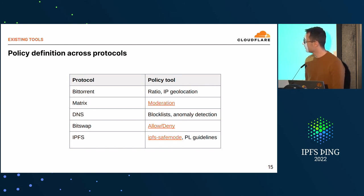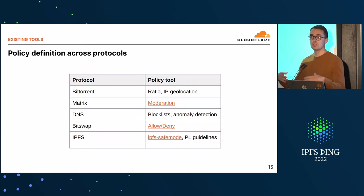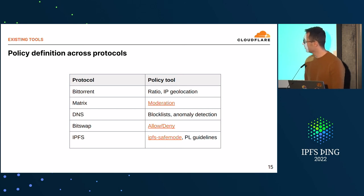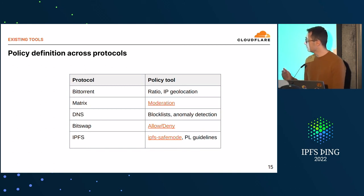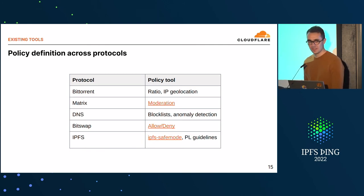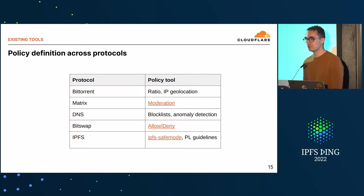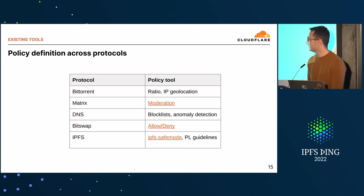Matrix has a very nice approach of room moderation — communities have shepherds who can decide what should be allowed, which is very important for freedom of speech within certain communities. DNS also has blocklists with anomaly detection to avoid amplification attacks. For BitSwap — and I'm very happy to say this — in the last six months, BitSwap added an allow and deny list. So now at the BitSwap level you can configure which blocks you want to provide and which you don't. That's a great addition, but it hasn't yet made it to a full policy definition framework for IPFS.